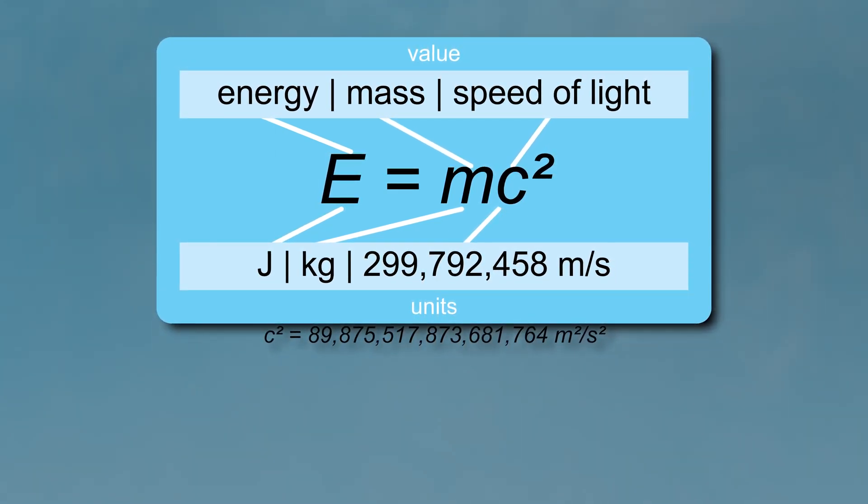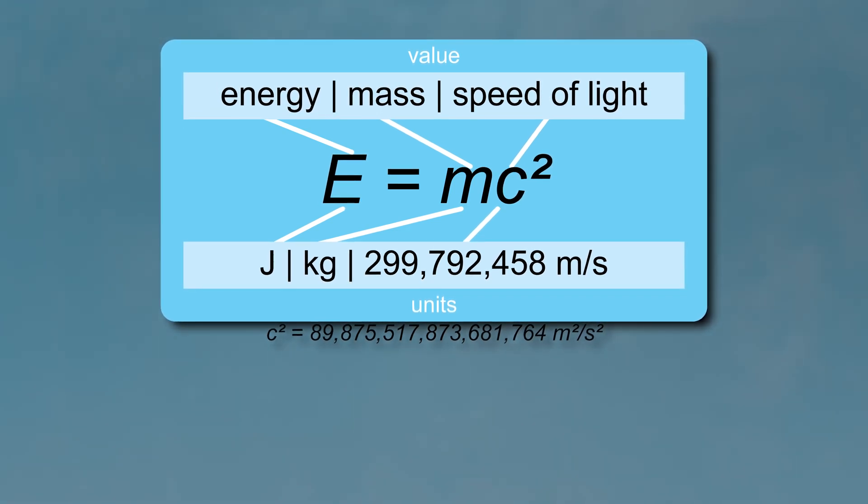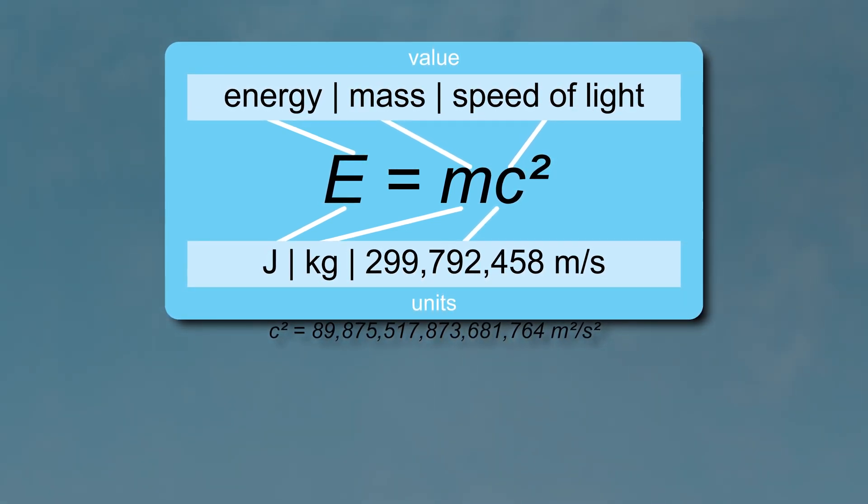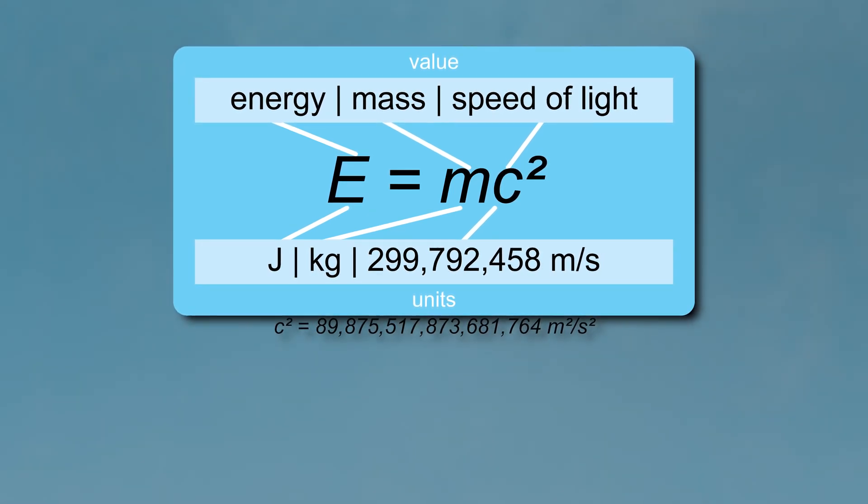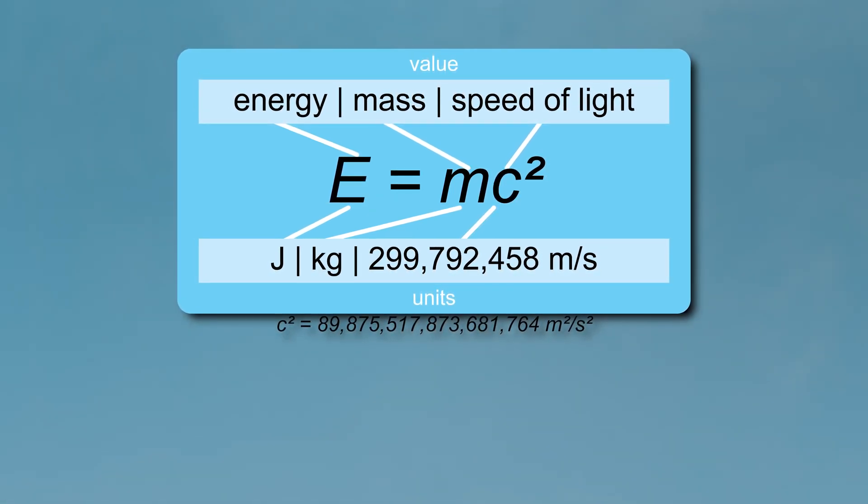According to special relativity, each body with rest mass m has mc squared of rest energy that might be transformed into other types of energy.